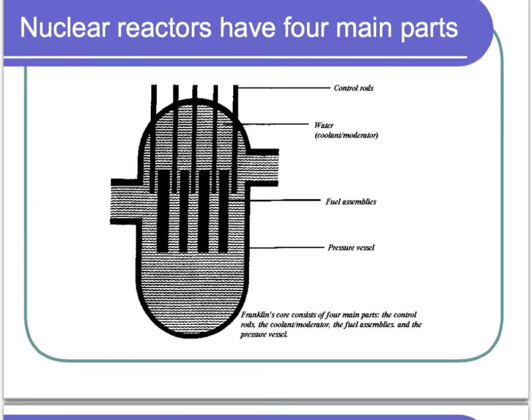When we look at a nuclear reactor, they have four main parts: the control rods that you can see going up and down, the water used to cool, the fuel assemblies, and a pressure vessel that it's all contained in.